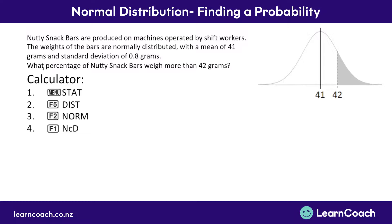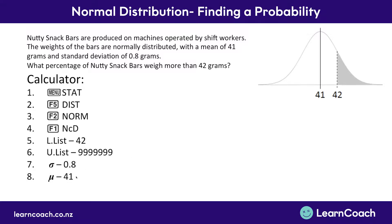We know we have a lower limit of 42 grams, because we're looking at what percentage of nutty snack bars weigh more than 42 grams. So we put our lower as 42. Then we put our upper as just 999999 — some ridiculously large number, because nothing's going to weigh like 10 tons. We plug in our standard deviation and mean, press execute, and that gives us a probability of 0.10564.